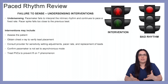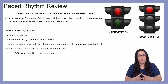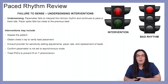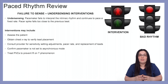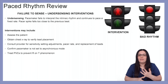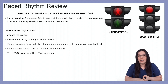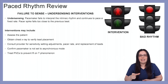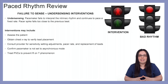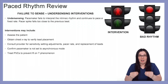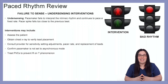For interventions, we always want to first assess our patient and make sure they are okay. We can obtain a chest x-ray to verify lead placement. We need to consult with the provider for sensitivity setting adjustments, pacer rates, and replacement of leads if those are causing the problem. We want to confirm the pacemaker is not set to asynchronous mode if it's not supposed to be, and we want to treat PVCs to prevent the R-on-T phenomenon, which could lead to lethal rhythms.